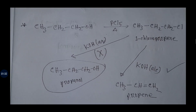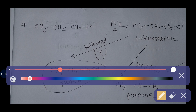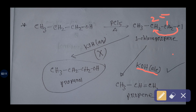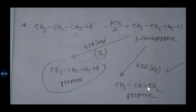If you add alcoholic potassium hydroxide, this chlorine will take hydrogen from the adjacent carbon, so a double bond will be formed between carbon 1 and carbon 2. Here is the double bond — this gives us propene.